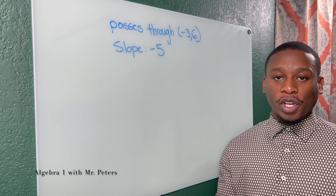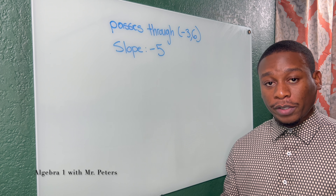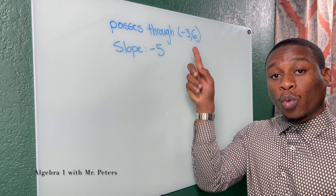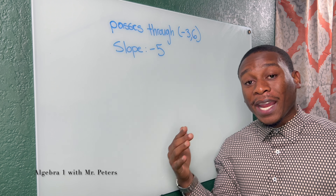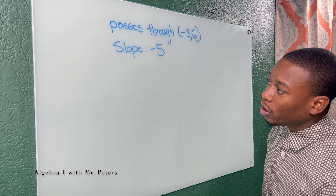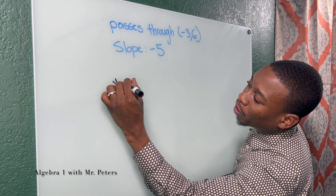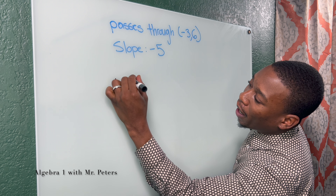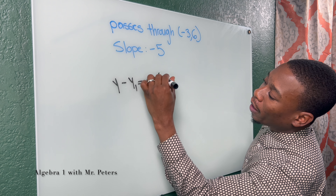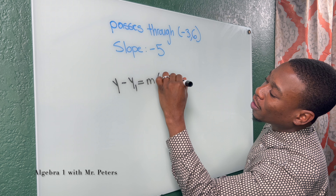In part one of this video, what they normally do is they give us the point that it passes through and the slope and ask us to create the equation. To create the equation, we have to use the point-slope formula: Y minus Y1 is equal to M times, in parentheses, X minus X1.